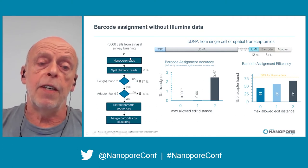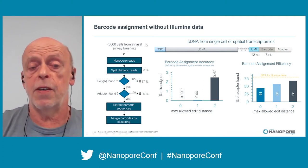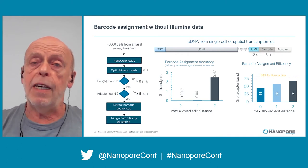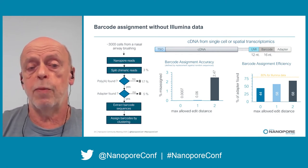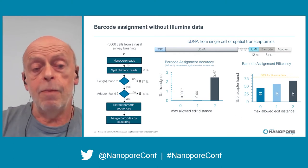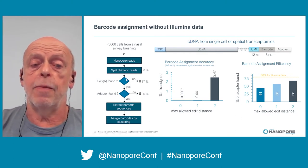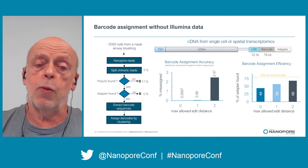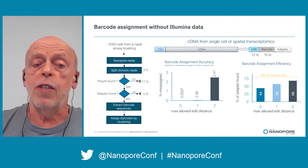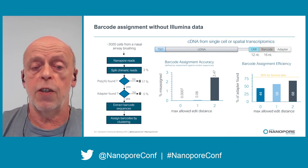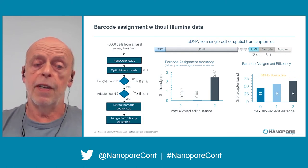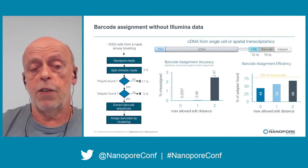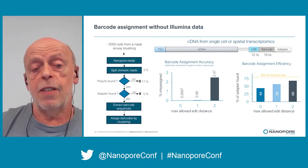What we currently do: we take the nanopore reads and split chimeric reads — that's about one to four percent of the total read number, mainly formed during LSK109 library preparation. Then we search for poly-A tails; a correct mRNA cDNA should have a poly-A. We lose about 20% of reads here, mainly PCR artifacts generated during the 10x Genomics workflow. Next we search for adapters and lose about 5% of reads — we don't care about those, as they are mainly low-quality reads.